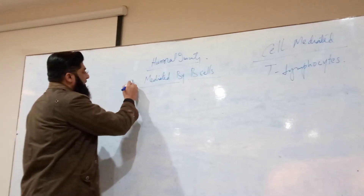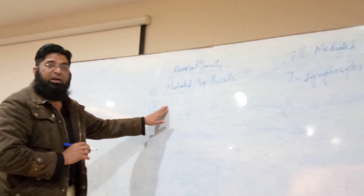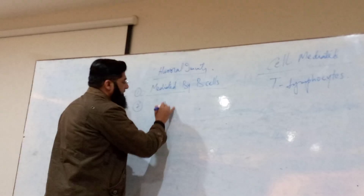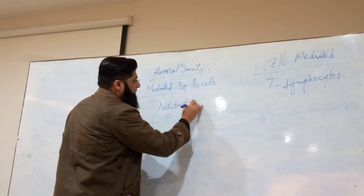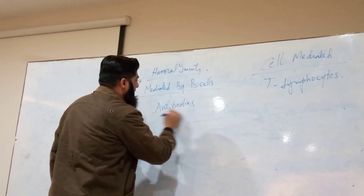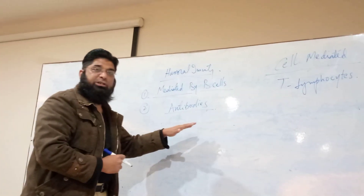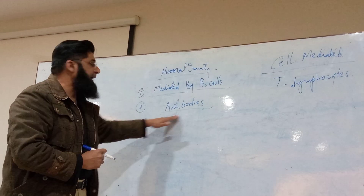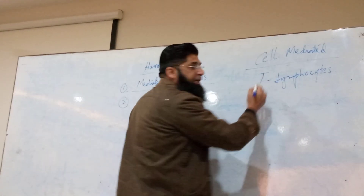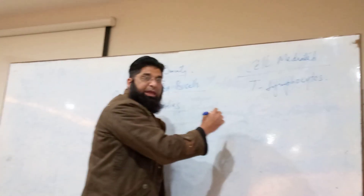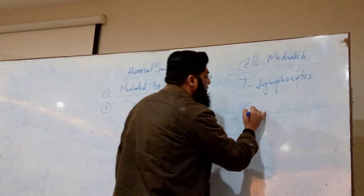Number two: the main effectors of humoral immunity are antibodies — humoral immunity exerts all its effects through antibodies. On the other hand, cell-mediated immunity affects through the production of cytokines.